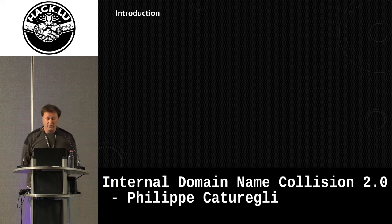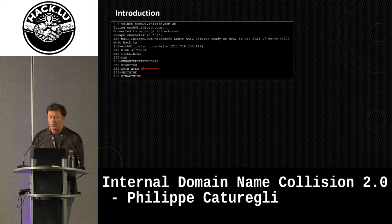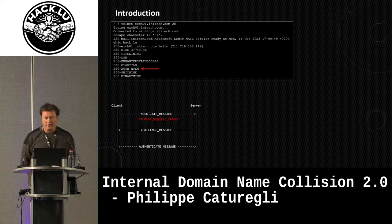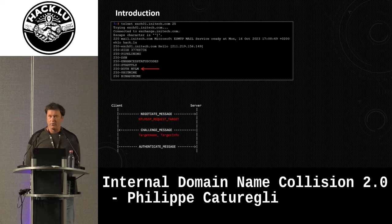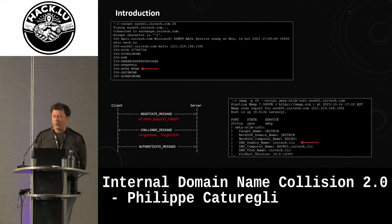Looking at the external attack surface, we found an exchange server that supported NTLM authentication. The cool thing with the NTLM challenge-response protocol is that a client can send an NTLM SSP request with a target in the first packet, and it will force the server to respond with some information about the target in its challenge message. Nmap has a built-in script for this, and you can extract the name of the internal domain from that.